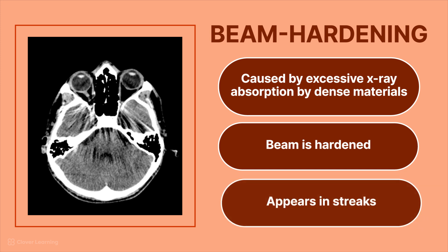Beam hardening looks like streaks extending from those dense materials in the body. The image on the left is a good example: this patient was shot in the face with a shotgun, leaving several small metal pellets inside the face. These very dense pellets excessively absorbed or attenuated the X-ray beam, confusing the CT processing algorithms and resulting in the streaks you see on the image.